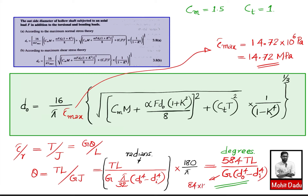Substituting G = 84 × 10⁹ Pa, L = 5 m, T = 57,300 N·m, d_outer = 0.6 m, and d_inner = 0.3 m into the angle of twist formula gives θ = 0.164 degrees. This completes the full solution for a shaft subjected to combined axial force, bending moment, and twisting moment.